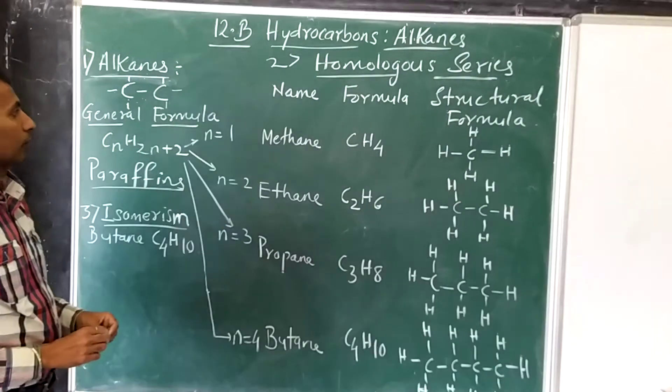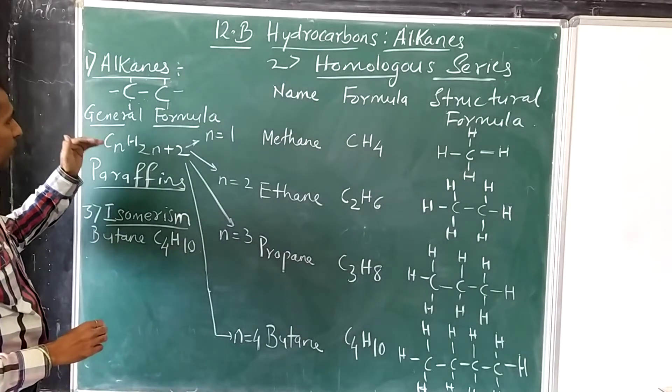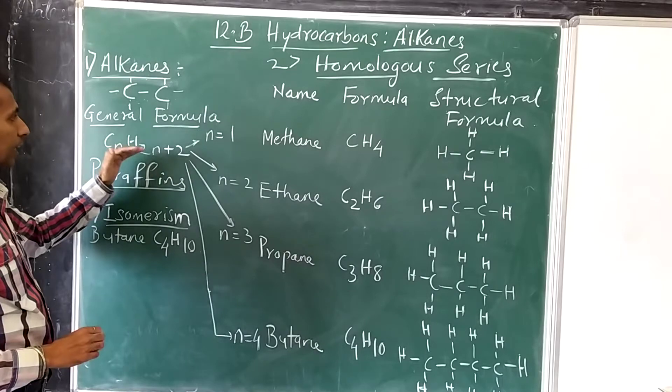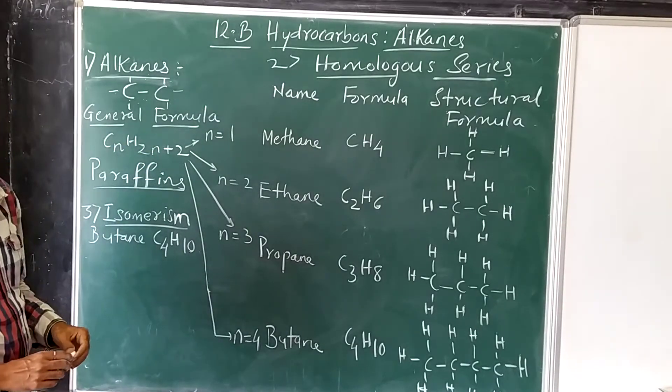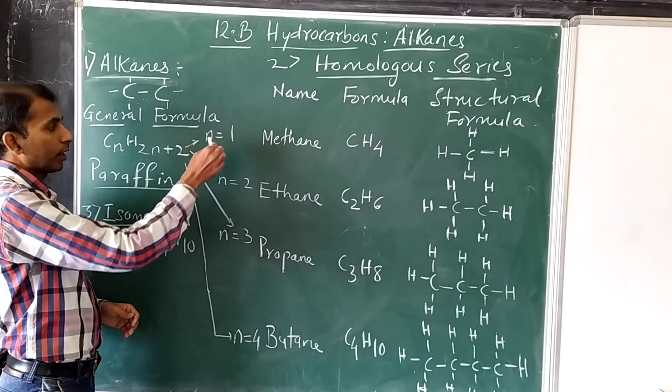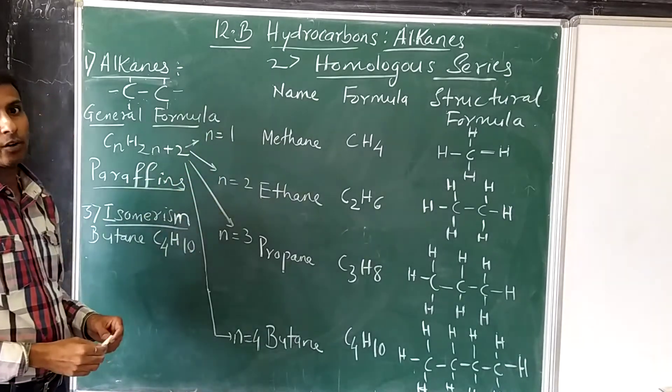Now, when we have already introduced the general formula for alkanes, that is CnH2n+2, we will substitute the values for n, that is n equals 1, 2, 3, and we are going to write down the homologous series for alkanes.